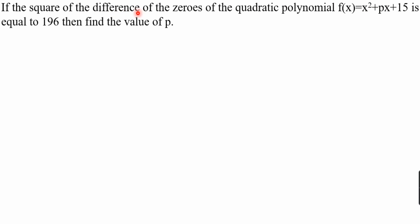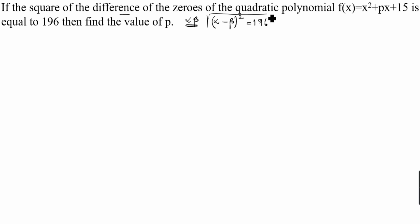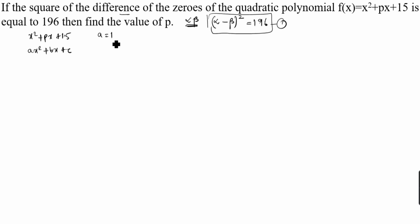What is the difference of the zeros of the quadratic polynomial? We will take alpha and beta as the zeros of the quadratic polynomial. So the difference is alpha minus beta, and the square of the difference equals 196. The quadratic polynomial is ax² + bx + c. In this case, a = 1, b = p, and c = 15.